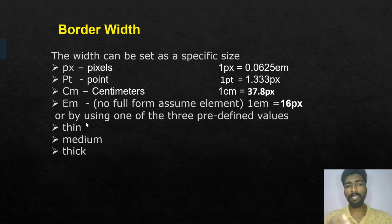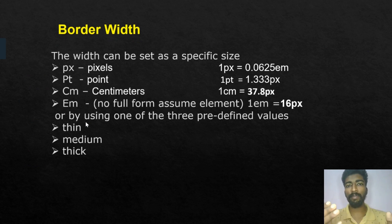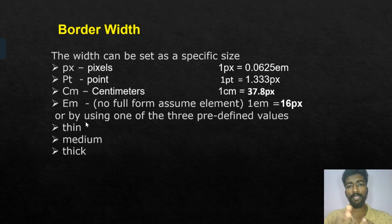This is thin, medium, thick — these are predefined values, the default values. In CSS, you can type the border width value. You can type the values: medium, thin, thick. These are default values — you can type those values. We can type the value in the same place or in the same class.